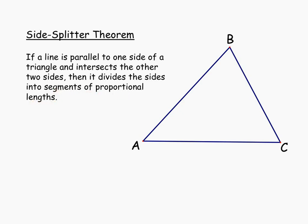Let's say we had a line segment parallel to AC — I'm going to sketch that in up here and mark it with the parallel line markings, labeling this point D and this point E. That parallel segment splits side BA into two different segments and also splits side BC into two different segments. The measurements for BD and DA, and for BE and EC, are in the same ratio — those segments are split proportionally.